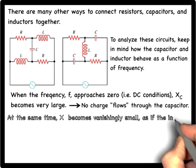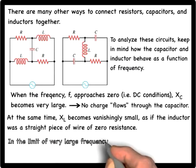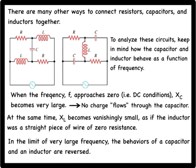In the limit of zero frequency, the reactance of an inductor is vanishingly small. The inductor offers no opposition to a DC current and behaves as if it were replaced with a wire of zero resistance. In the limit of a very large frequency, the behaviors of a capacitor and inductor are reversed.